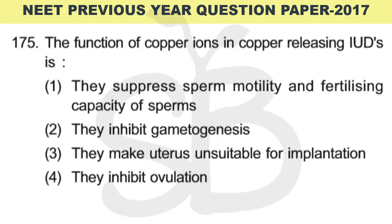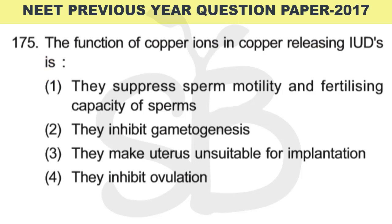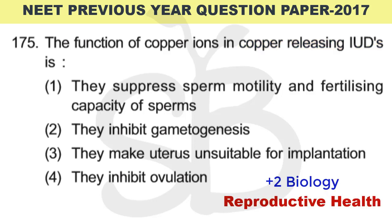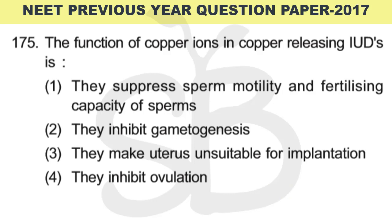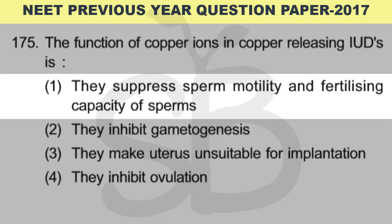Question number 175: What is the function of copper ions in copper-releasing IUDs? This is discussed in Plus 2 Biology, chapter Reproductive Health. Copper ions suppress sperm motility and reduce the fertilizing capacity of sperms. The correct answer is option 1: they suppress sperm motility and fertilization capacity of sperms.